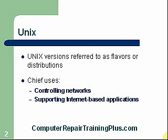Unix is one of the first operating systems we're going to look at. It has different flavors or distributions. Not as popular anymore since Windows and Linux have come around. Chief uses include controlling networks and it's used a lot on the internet as a server. It supports internet-based applications.